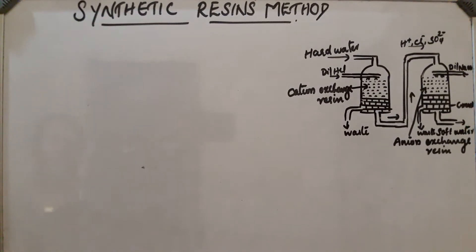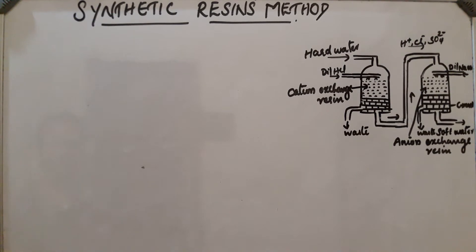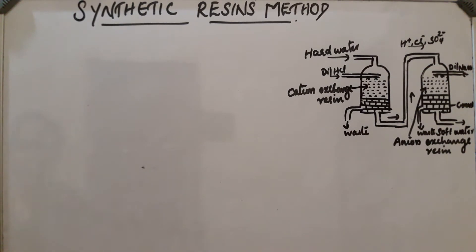There are different methods for the removal of permanent hardness. In our last session we discussed three methods. Now the fourth method is the synthetic resin method. This is more prevalent nowadays. It is superior over the ion exchange method because they remove all types of unwanted cations and anions present in hard water.